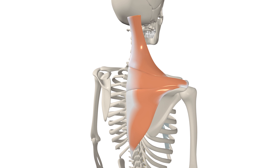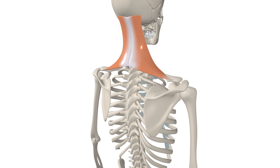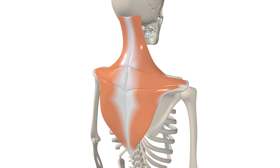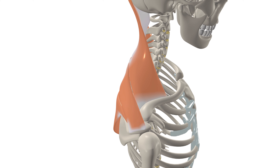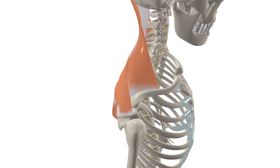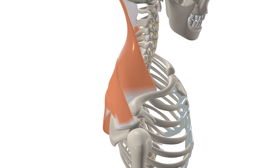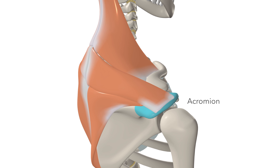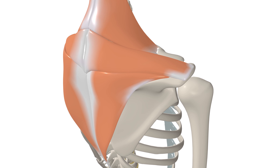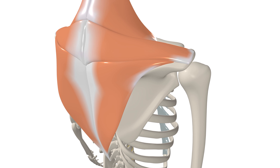From this origin, we have superior, middle, and inferior fibres. The superior fibres are inserted into the posterior border of the lateral third of the clavicle. The middle fibres insert into the medial margin of the acromion. The inferior fibres converge into an aponeurosis which inserts on the scapular spine more medially.